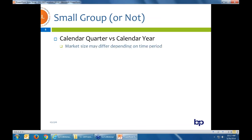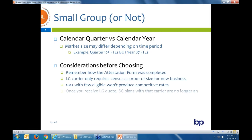Whether you could do calendar quarter or year — everyone will allow either except Anthem at this point. Think it through when filling out these forms. All carriers are sending out attestation forms, and whatever the group indicates is what that carrier is going to take as the group size. If you say you have 101 full-time equivalents but you have very few medical eligibles — which is very common in, say, a restaurant — you're going to have 110 full-time equivalents when you add up all the staff employees, but only 40 medical eligibles.